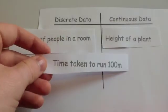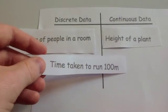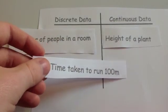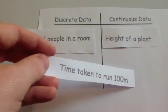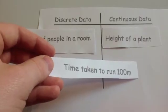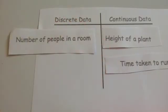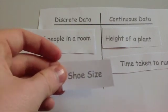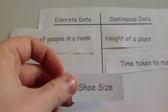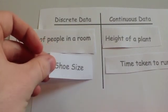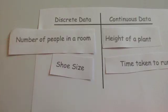The time taken to run 100 metres — again, that can take any value on the scale of time, so it's going to be continuous. And finally, shoe size. Because shoe size can only take certain values, it's a discrete piece of information — discrete data.